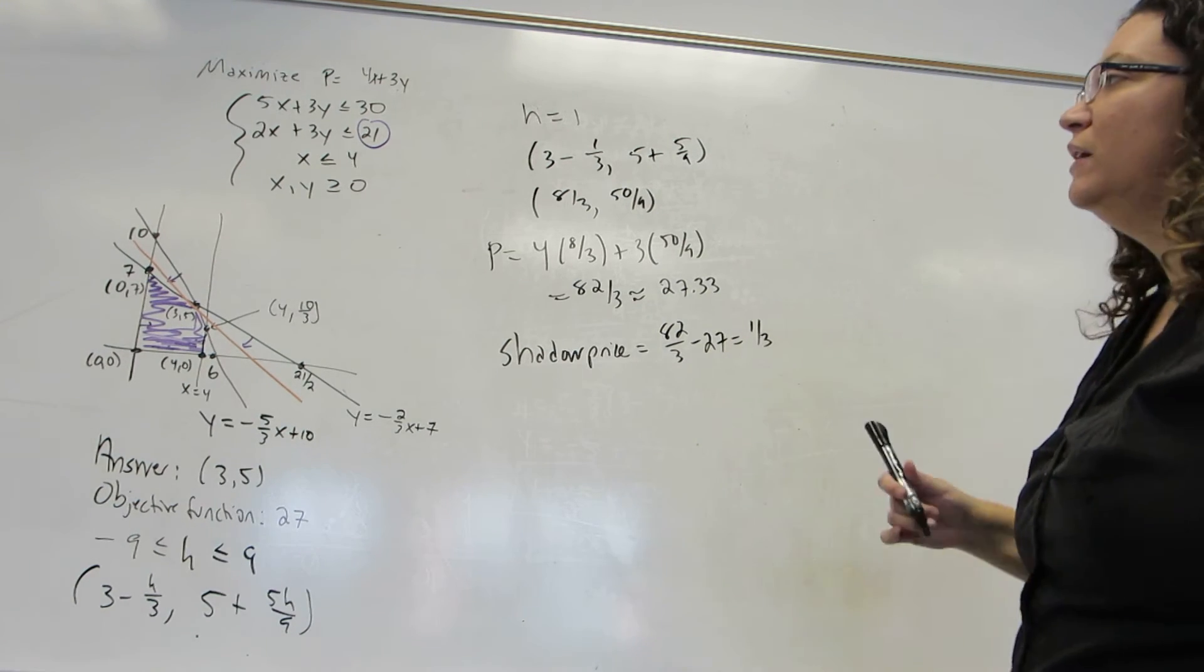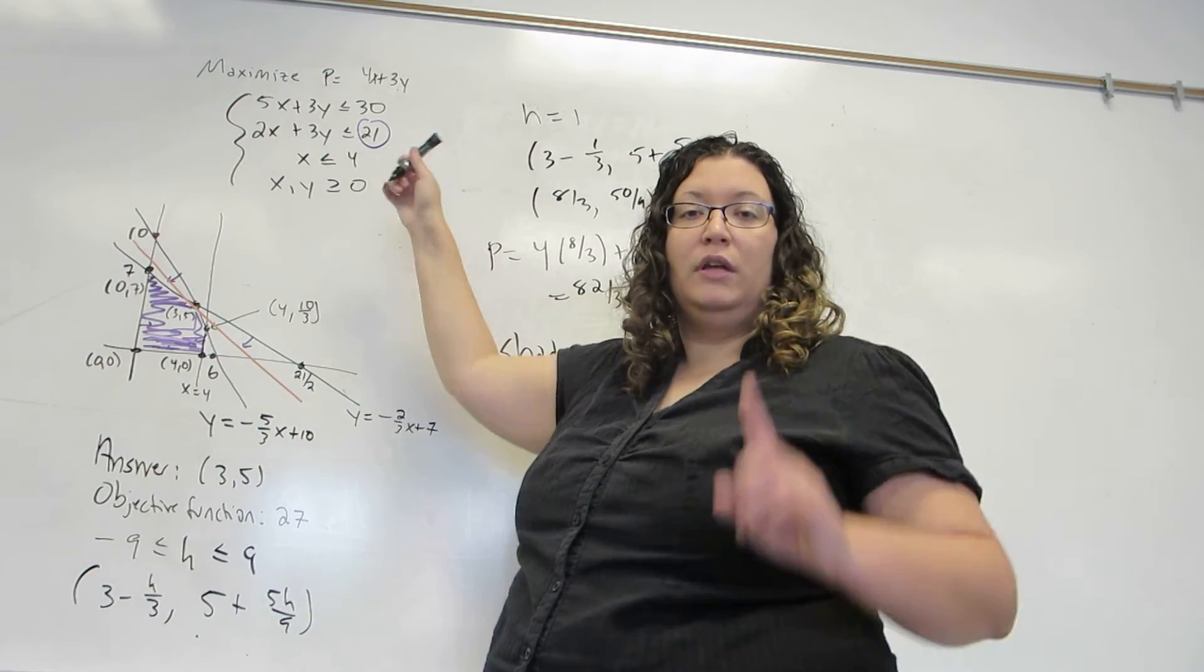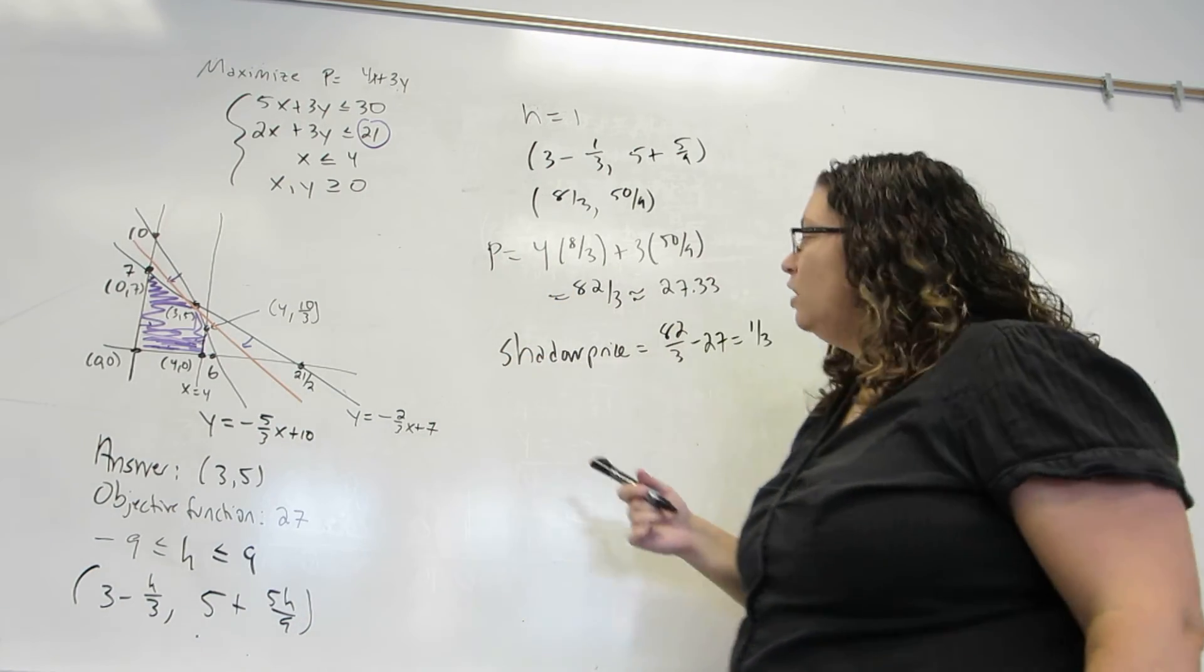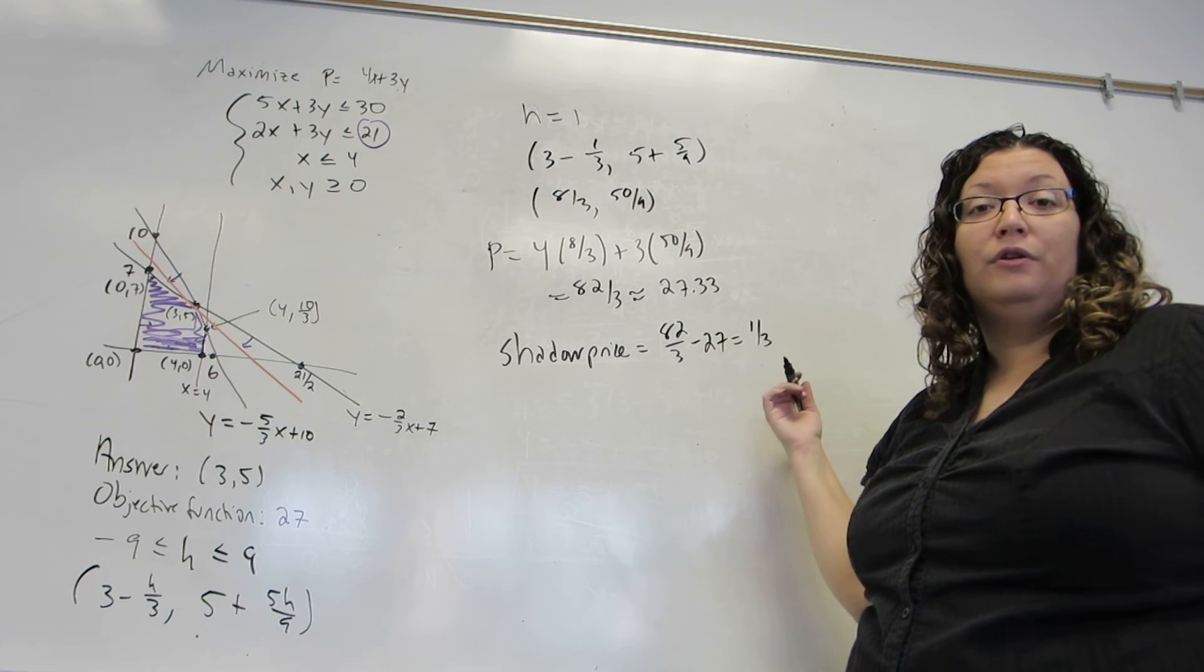Meaning, that if I increase this 21 to 22, if I go up by 1, my profit will go up by a third of a dollar, or .333.